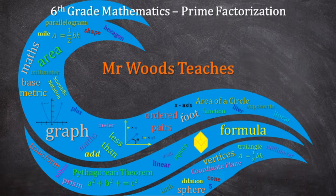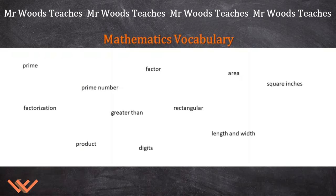Today for 6th grade mathematics, I'm going to be working on prime factorization. Here's some vocabulary you're going to be encountering: prime, prime number, factor, area, square inches, factorization, greater than, rectangular, product, digits, length and width. Get out your composition book right now, write the word down, write the definition, and two examples for each one.